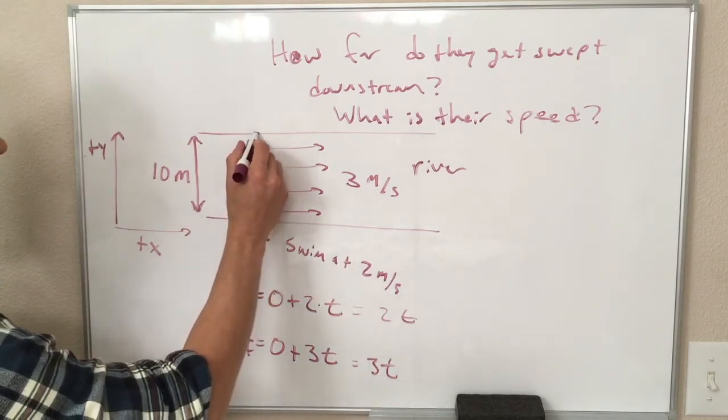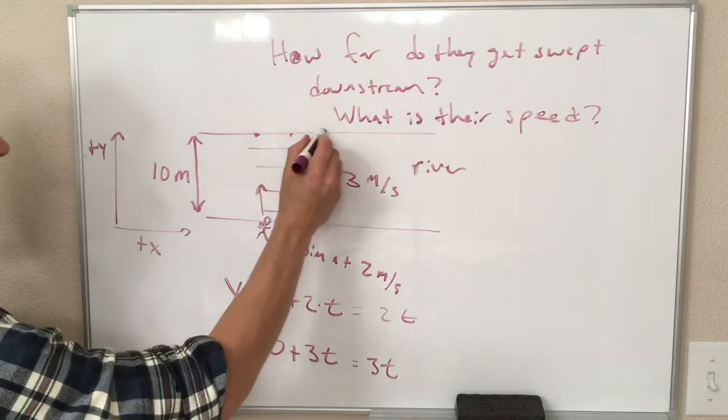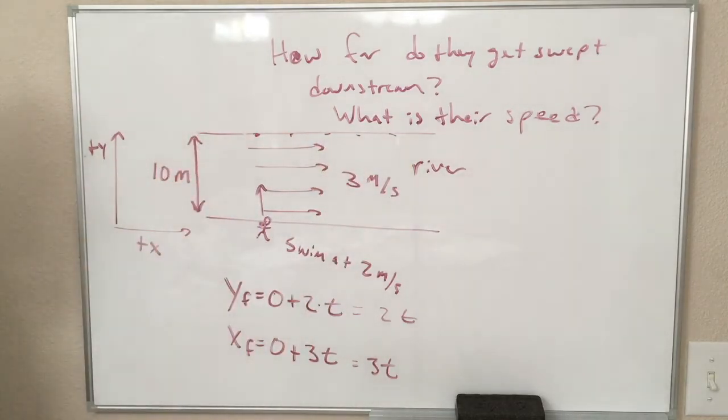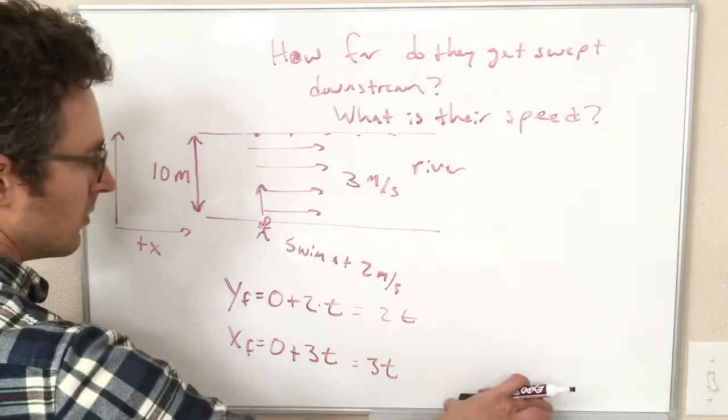If they're getting all the way to here, no matter if they're ending up here, or here, or here, or here, the y distance for all of these is the same. It's all 10 meters, so wherever they end up, they will have gone 10 meters in the y direction, so y final is equal to 10 meters.